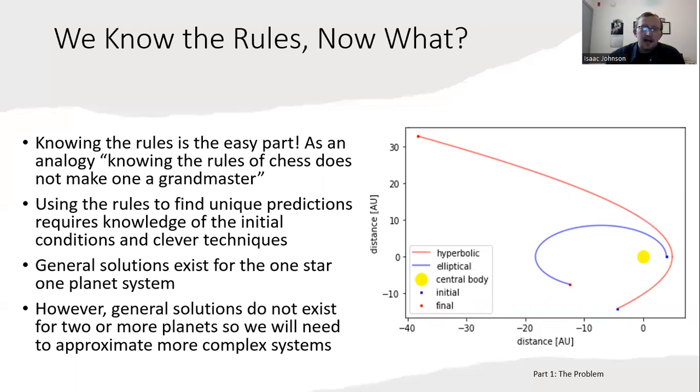Turns out knowing the rules is the easy part. As an analogy, knowing the rules of chess does not make me a grandmaster. Using the rules to find unique predictions of solar system orbits requires knowledge of the initial conditions—initial position and velocity of the planet—and clever techniques. It turns out that general solutions exist for the one star, one planet system and were first explained by Kepler's three laws, but later confirmed with Newton's newly found calculus.